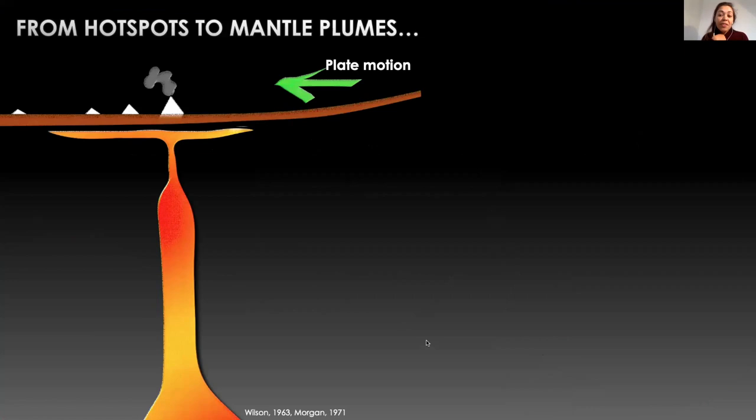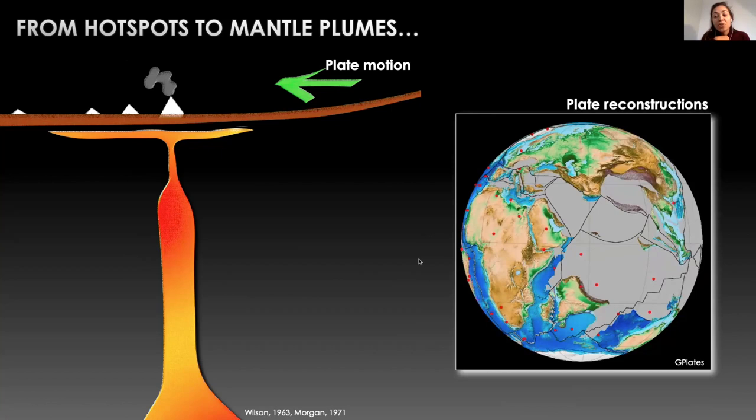Very early in our understanding of plate tectonics and mantle convection, geoscientists used the concept of mantle plumes to explain the presence of hotspot tracks at the surface of the earth. They were believed to be fixed, so we have used mantle plumes as absolute reference frames for reconstructing past plate motions.